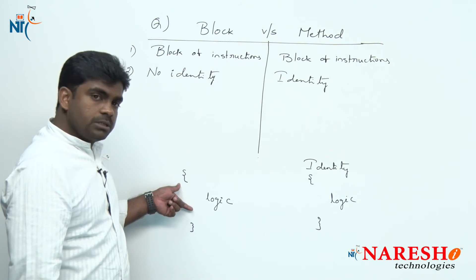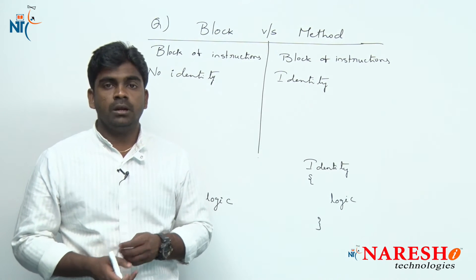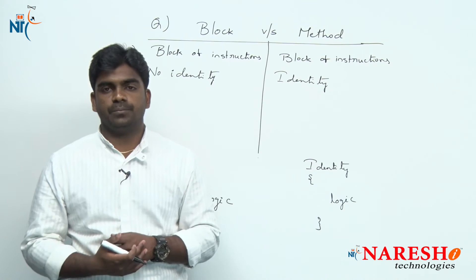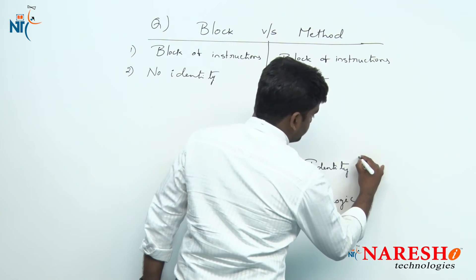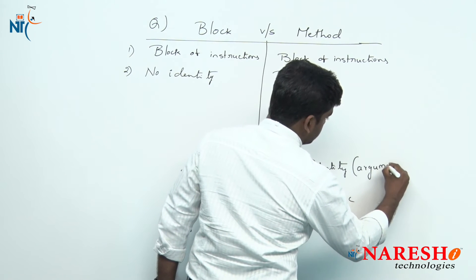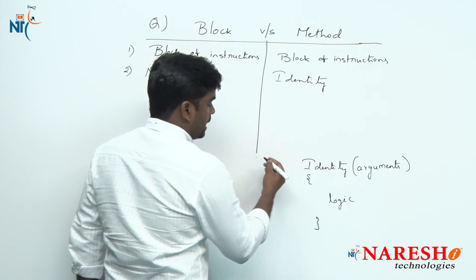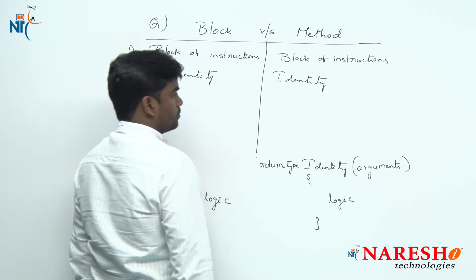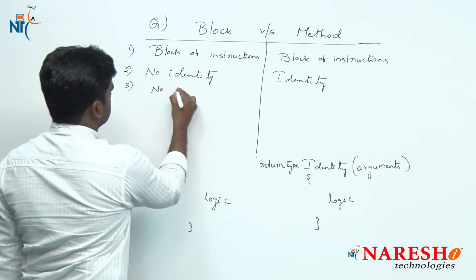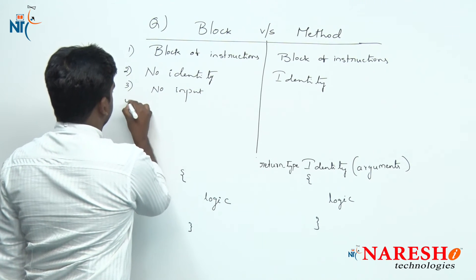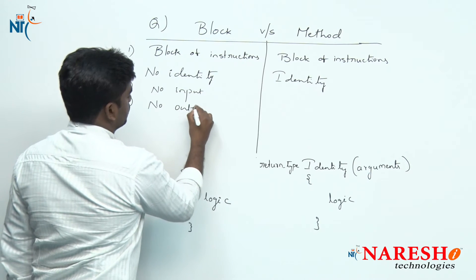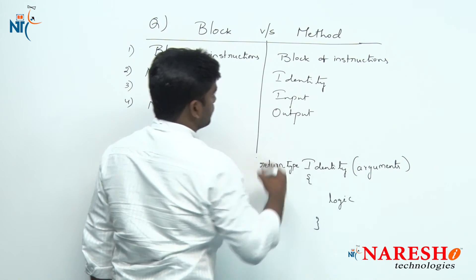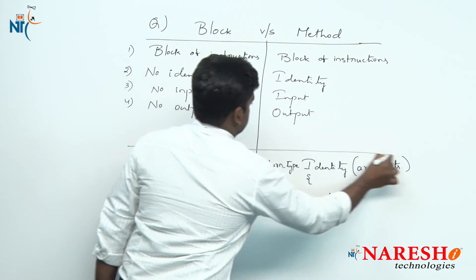The second difference: a block will perform some task but it will not take any input and it will not give any output. A method is not like that — a method takes input (technically called arguments) and gives output (technically called return type). So a block has no input and no output, while a method has input and output.